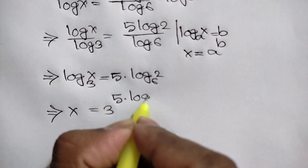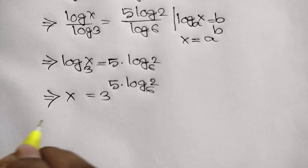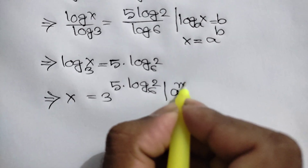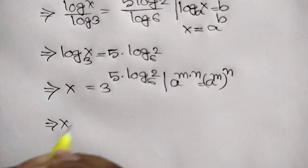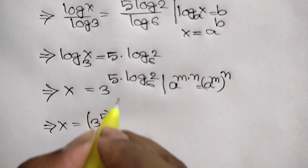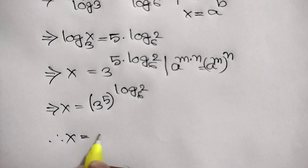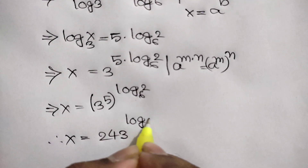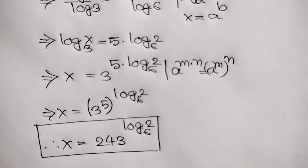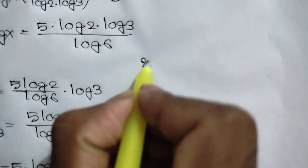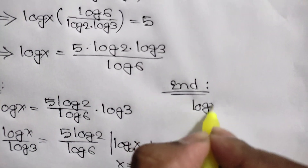We know that a to the power m times n is equal to a to the power m, whole to the power n. So we can write x is equal to 3 to the power 5, whole to the power log of 2 base 6. Finally, the value of x is equal to 243 to the power log of 2 base 6. This is our first final answer.